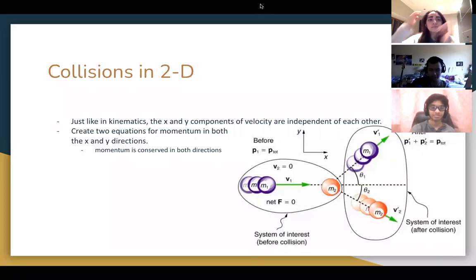Continuing where we left off last week, we can also have collisions in two dimensions. Just like in kinematics, x and y components of velocity are both independent of each other. So because of this, momentum has to be conserved in both directions, which means we need two equations for our conservation of momentum.